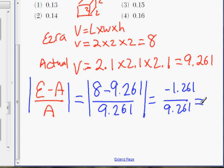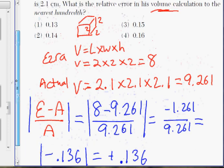This will be negative 0.136, which we're taking the absolute value, so it becomes a positive 0.136. And that should be your answer. Positive 0.136 is your relative error.